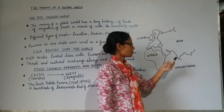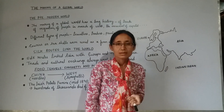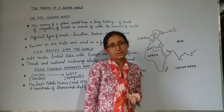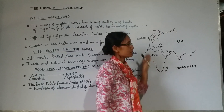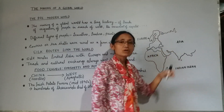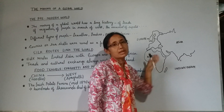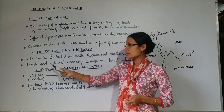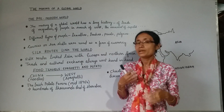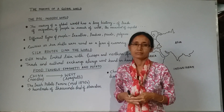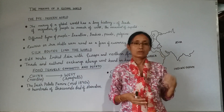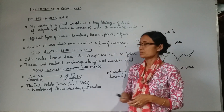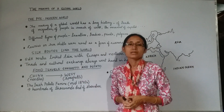From India, what were the things that traveled towards the west? Textiles and spices. In return, from Europe, gold and silver came back. Trade and cultural exchange always went hand in hand — with the flow of exchange of these commodities, there was also an exchange of culture.